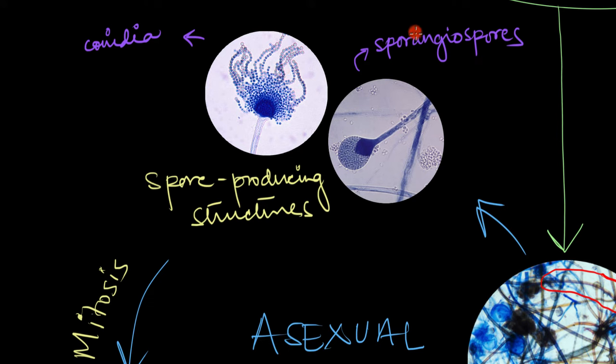Sporangiospores, on the other hand, are formed inside an enclosed structure called the sporangium. This enclosed structure right over here is called the sporangium. The plural form is called the sporangia. So these sporangiospores are formed inside these sac-like structures called sporangia.